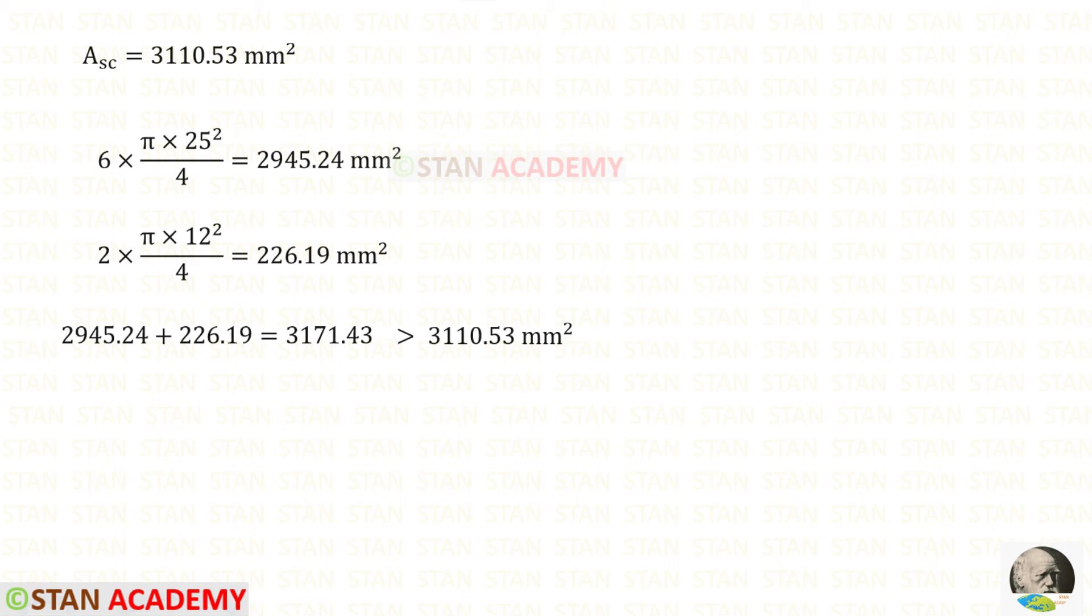For the area of longitudinal reinforcement we have got this. Now we have to use trial and error method. We have to try with different diameters. I have tried with 25 mm and 12 mm diameters. I am going to use 6 numbers of 25 mm diameter and 2 numbers of 12 mm diameter bars. When we add these two areas we will get approximately equal to this. But we have to make it sure that the provided area is more than the required area. You can try with different diameters with different numbers. The total area should be approximately equal to and a little more of these.